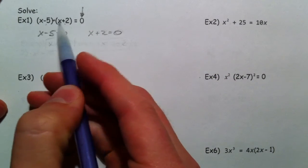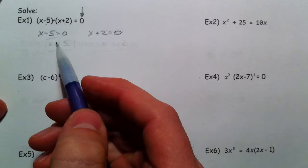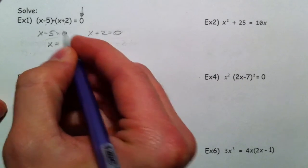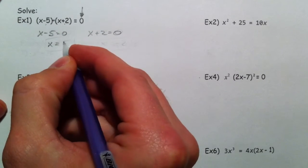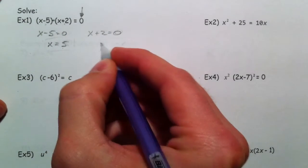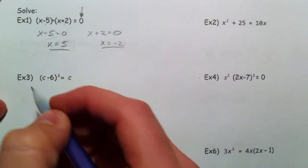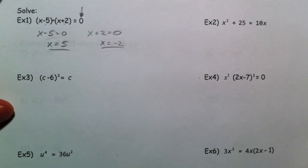One of the two has to equal zero in order for them to multiply to zero. It's called the zero product property, that's the fancy word. But then just set all the parts that are multiplied equal to zero, add the 5 over, you get 5, subtract 2, and so x equals 5, x equals negative 2 are your two solutions.